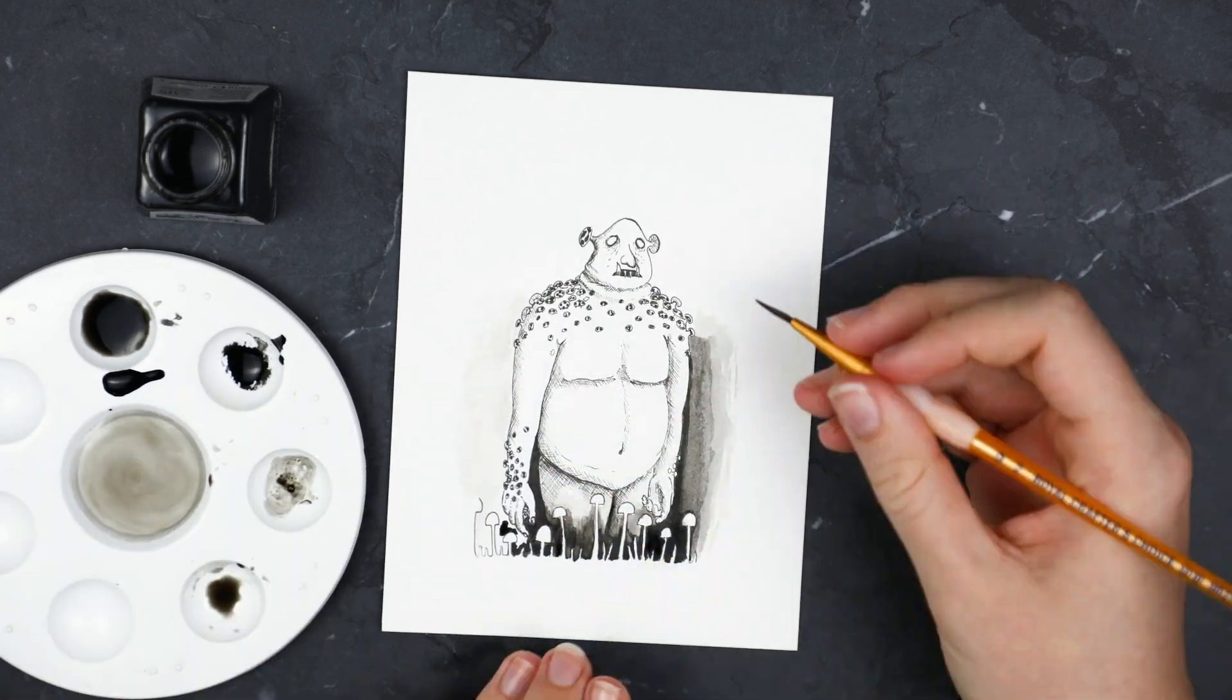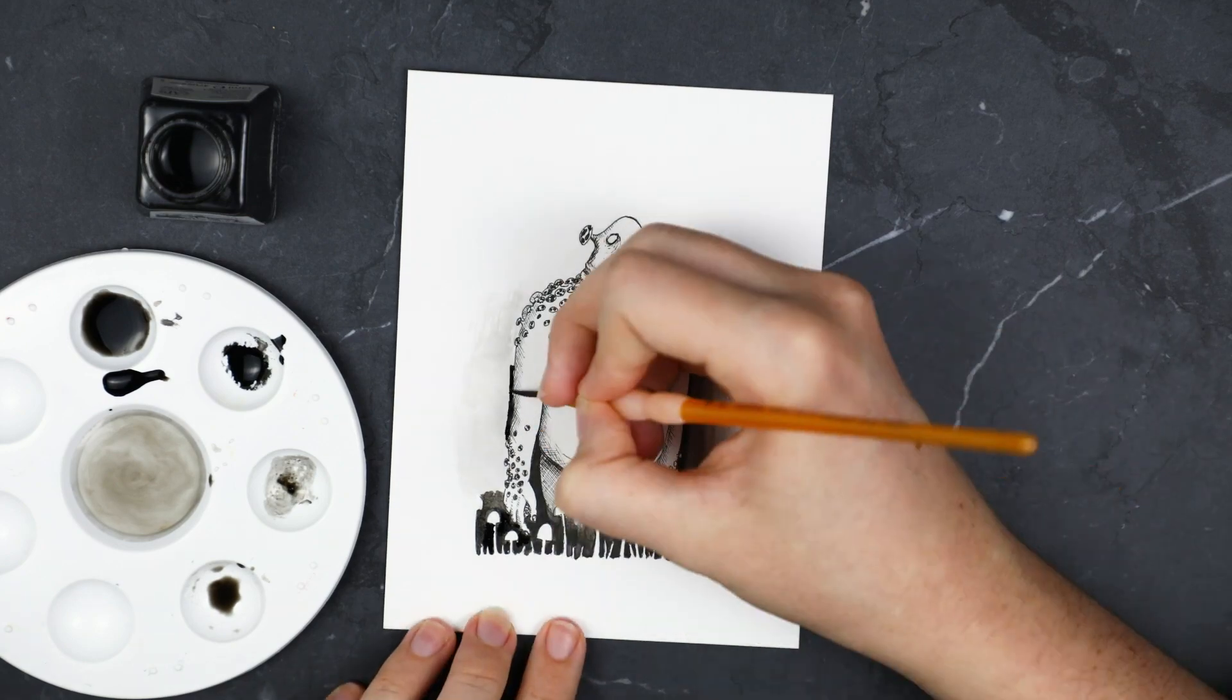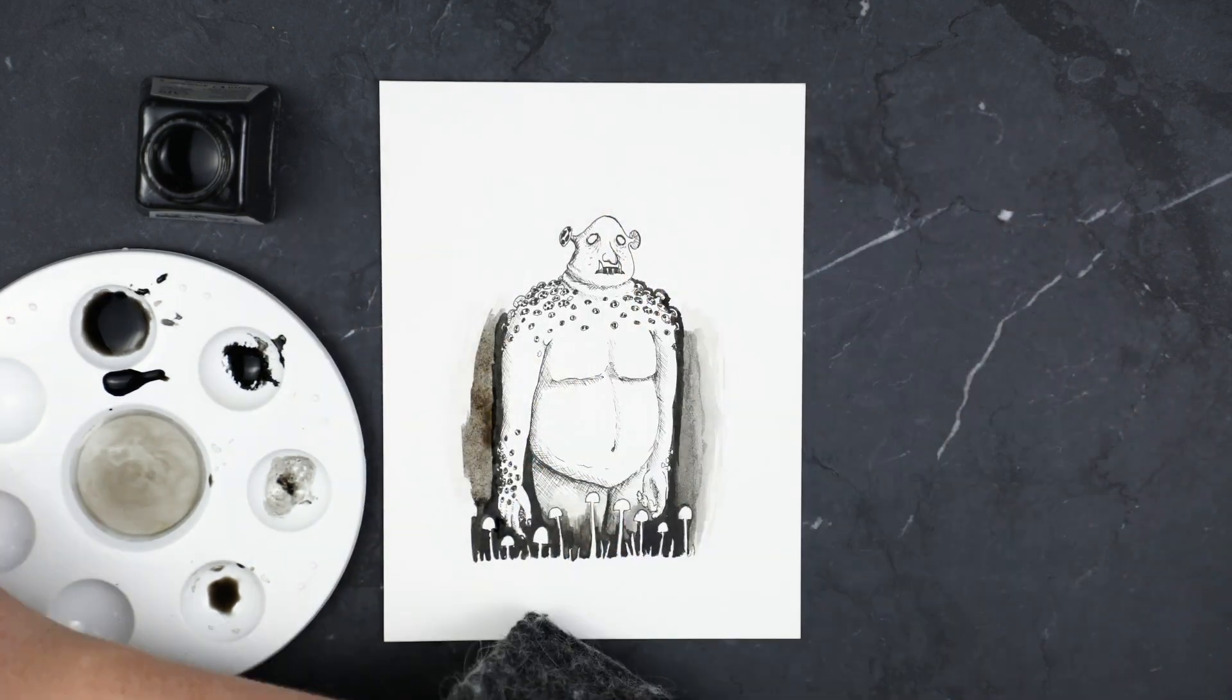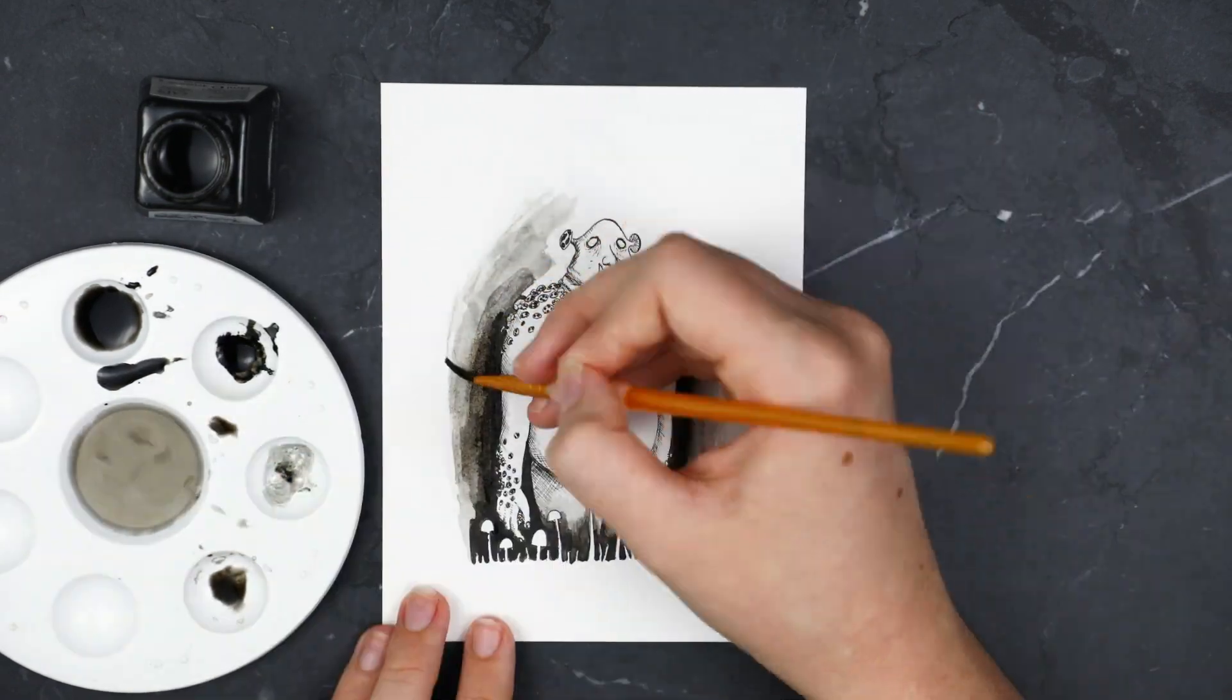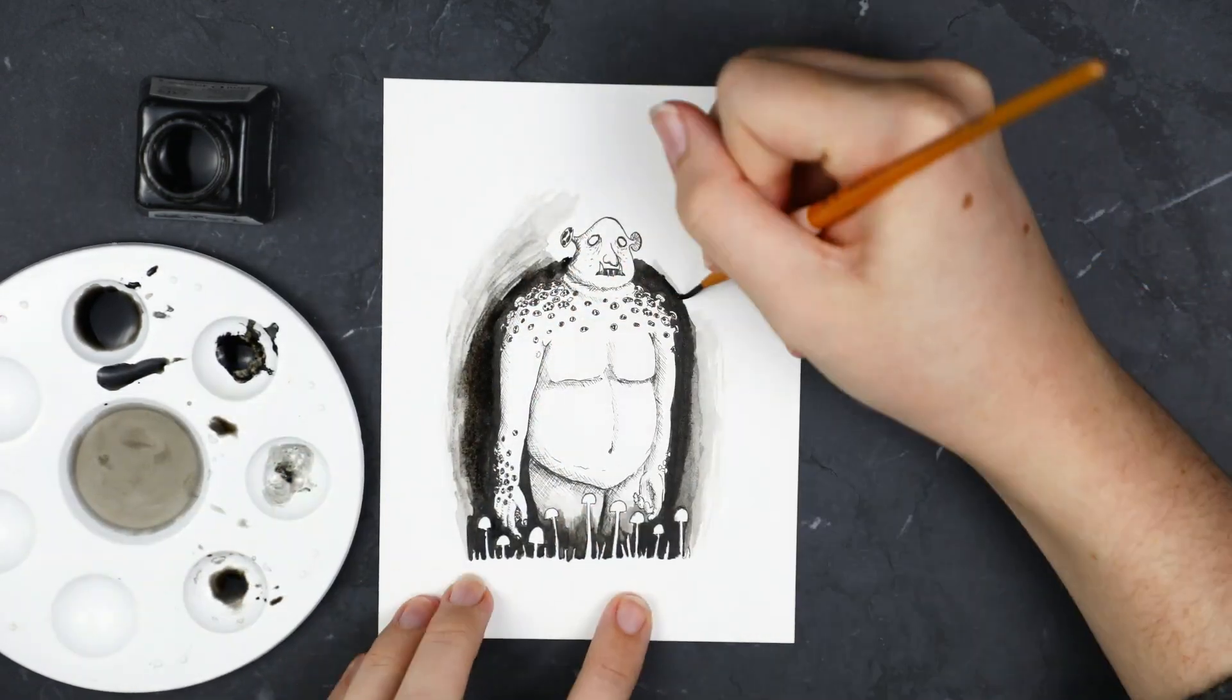To create the gradient effect, I watered the ink down with a lot of water. I'll link all the materials in this video in the description box down below if you want to know the exact brands I use.